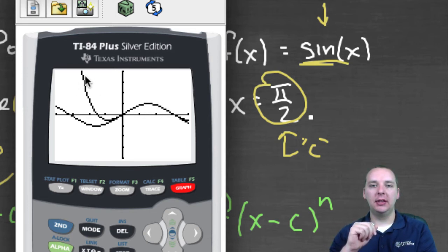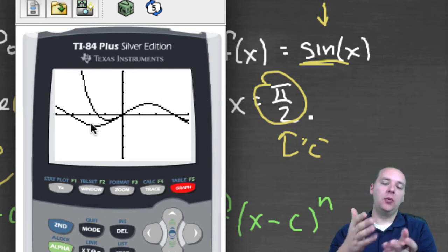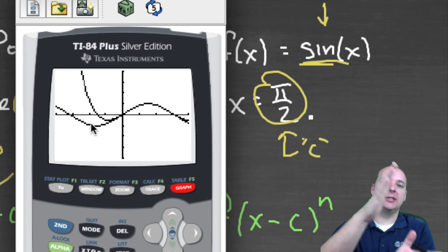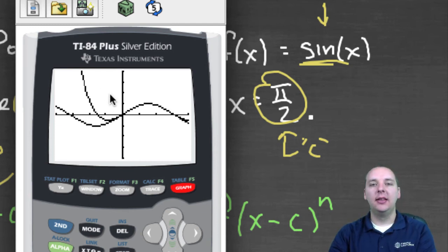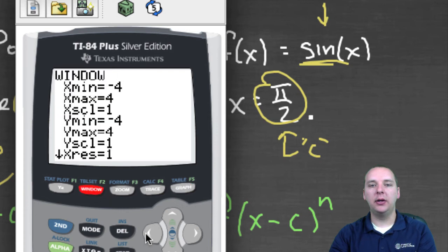Now as you go to the left or go to the right, what happens as you move to the left? The approximation leaves the sine curve. The polynomial doesn't approximate sine over here, but that's okay. If you wanted a good approximation over here, we should have centered it appropriately.